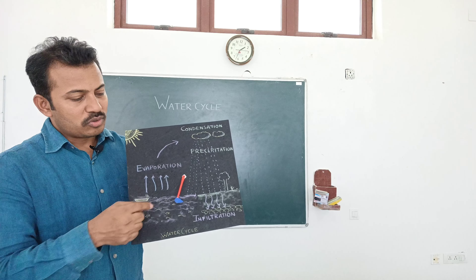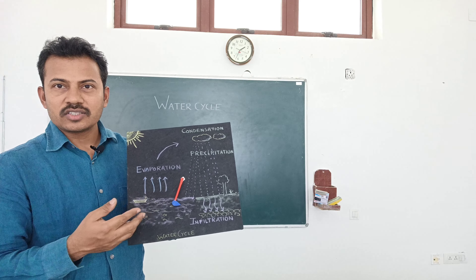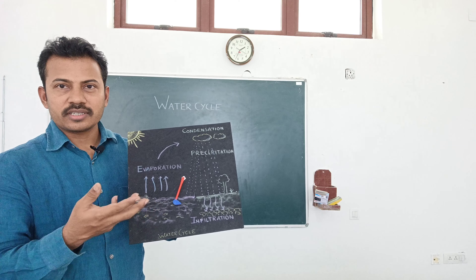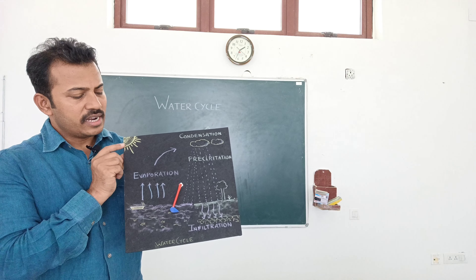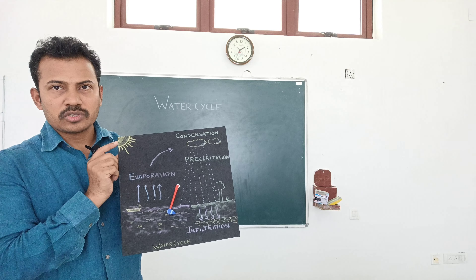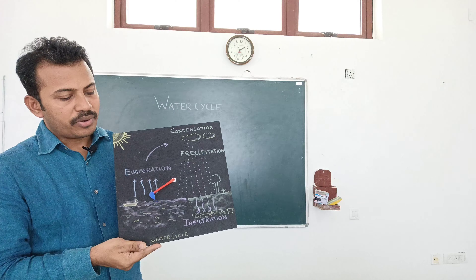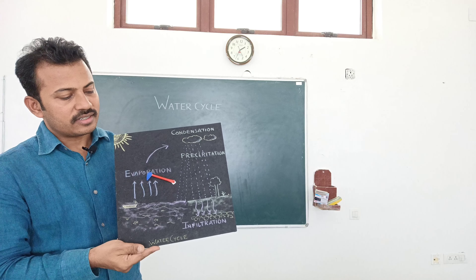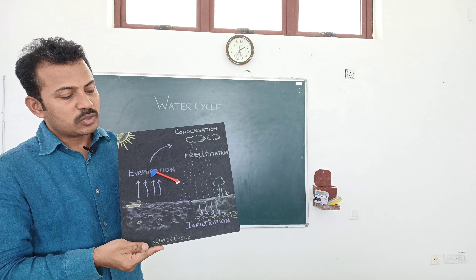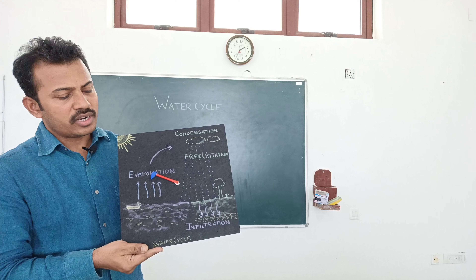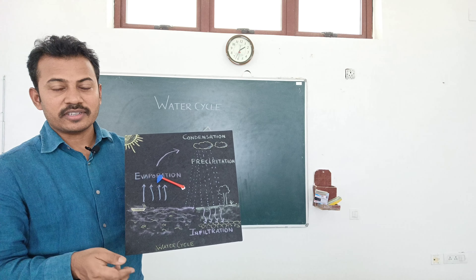The water droplet which is here in seas, oceans, and different water bodies — when it gets exposed to sunlight, it evaporates. It turns into vapour, and this process is called evaporation. It then enters the atmosphere.